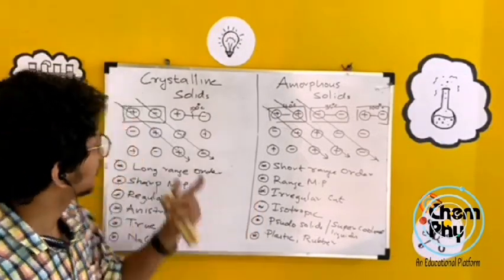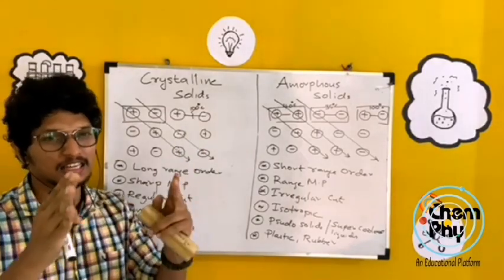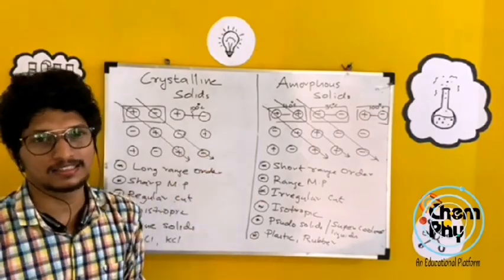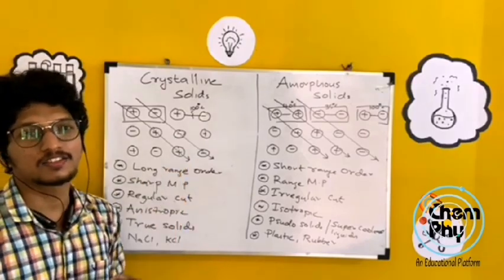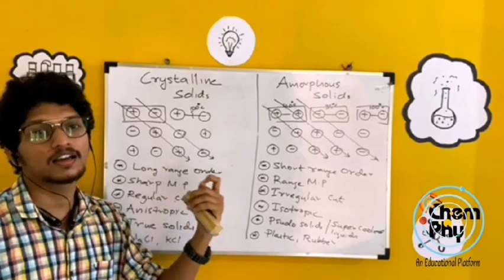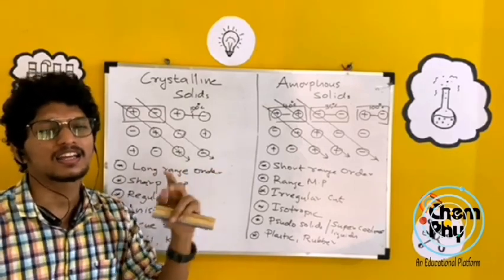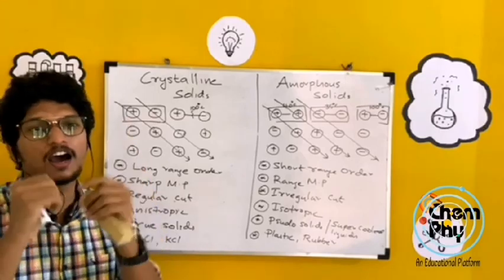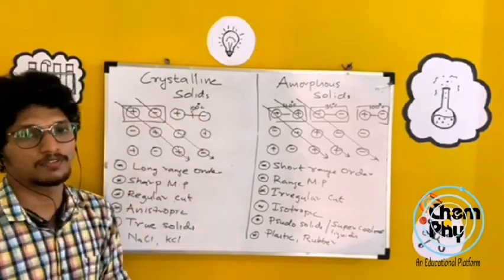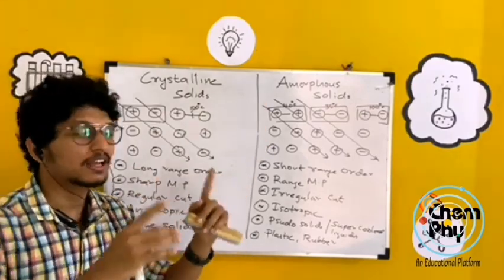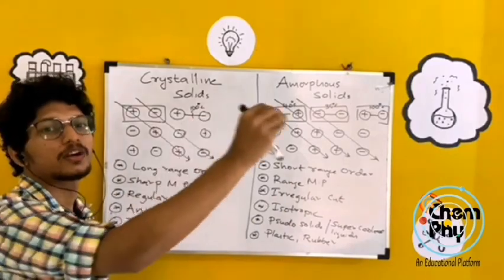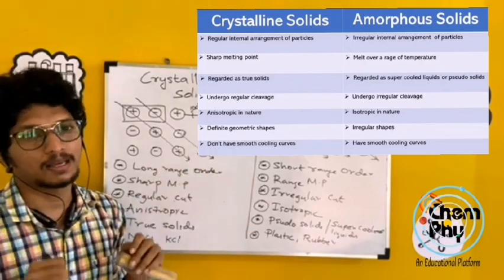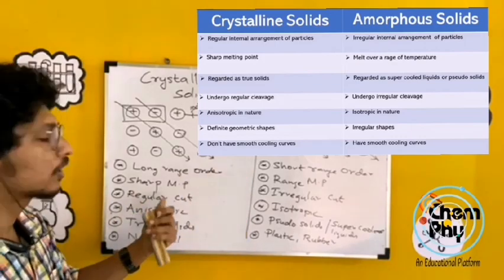To summarize: in the case of crystalline solids, the constituent particles are regular, repeating, and alternating, while in amorphous solids the particles are randomly arranged. Crystalline solids have long-range order while amorphous solids have short-range order. Crystalline solids have a sharp melting point, while amorphous solids have a range melting point.